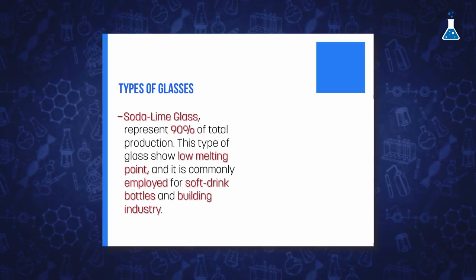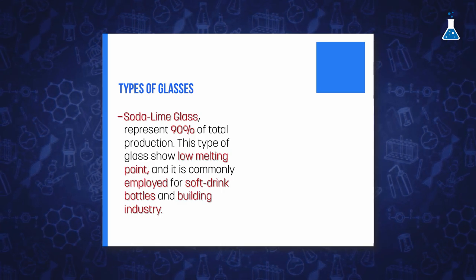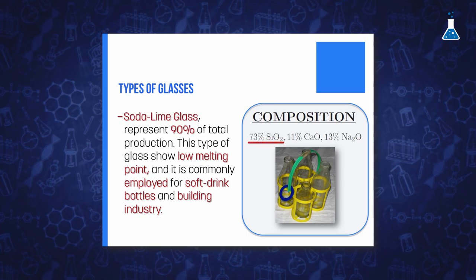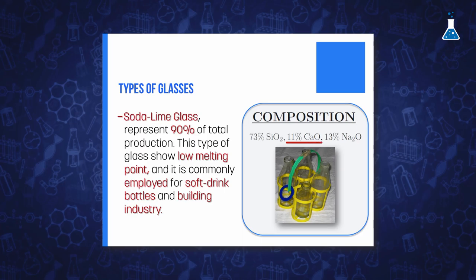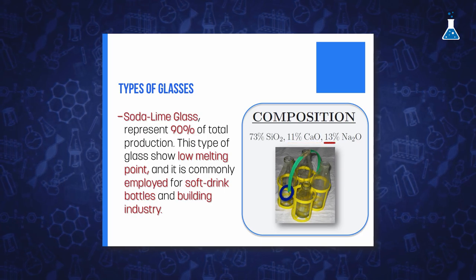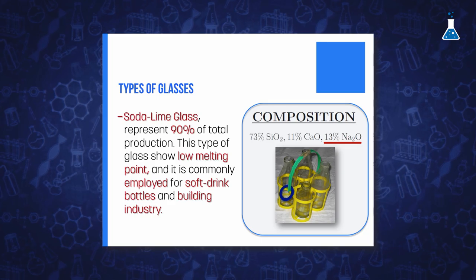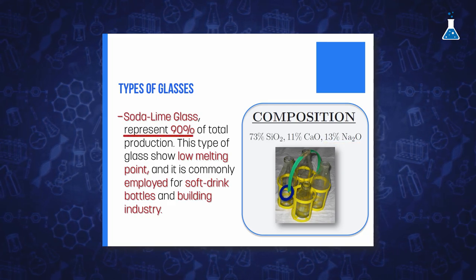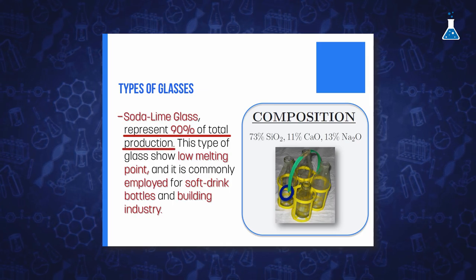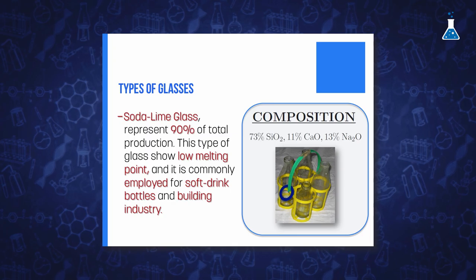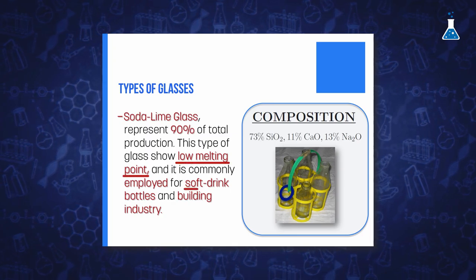This material offers the possibility to change its main properties by adding other oxides. As a result, there are three main types of glasses commonly produced. The main glasses produced today are, first, soda-lime glass with a proportion of 73% silicon dioxide, 11% lime, and 13% sodium oxide. This type of glass represents 90% of the total production. It presents a low melting point and is commonly employed for soft drink bottles and in the building industry. The function of sodium oxide is as a flux, while the function of calcium oxide is as a stabilizer.